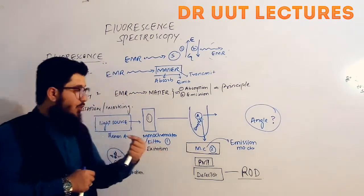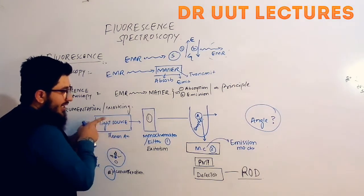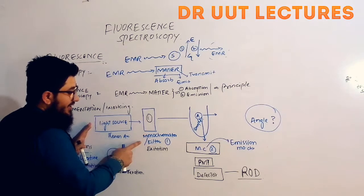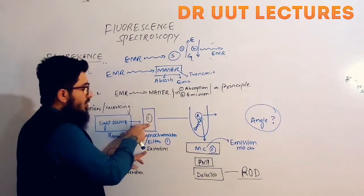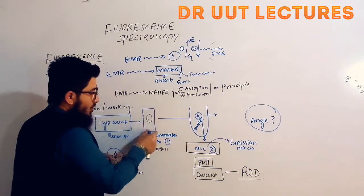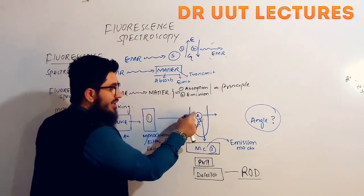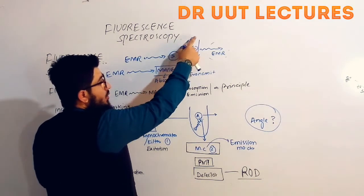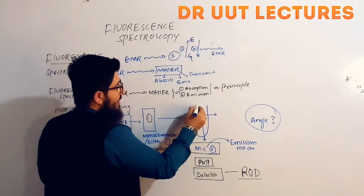Now let's move towards the working. The xenon arc radiation source provides radiations that are targeted towards the sample. The excitation monochromator filters these radiations — it is called the excitation monochromator because it provides radiation that is going to excite the sample. The radiation passes through the monochromator, reaches the sample, and some radiation is absorbed. The atom moves from the ground to the excited state, and since it is unstable there, it comes back to the ground state and emits radiation.